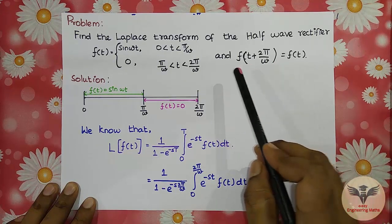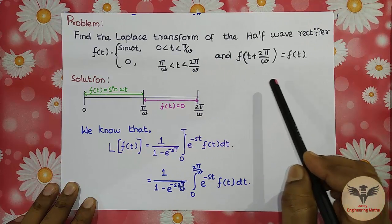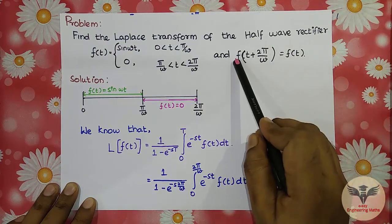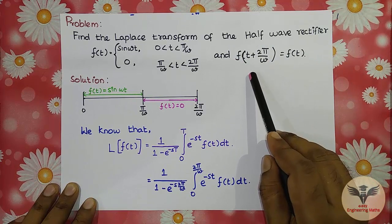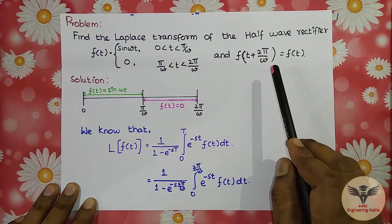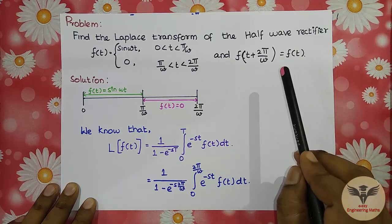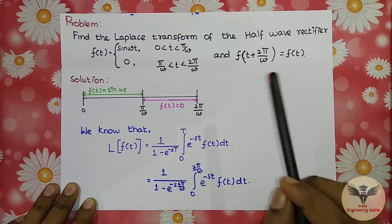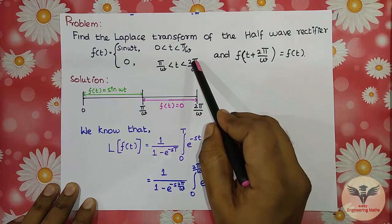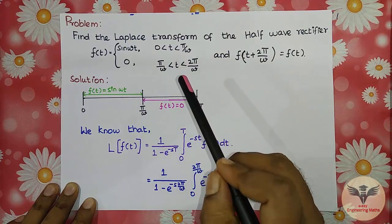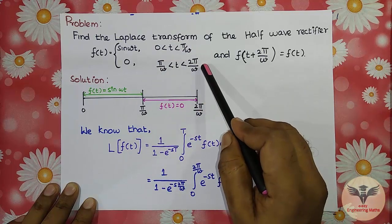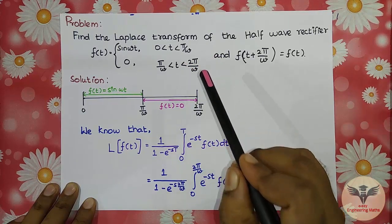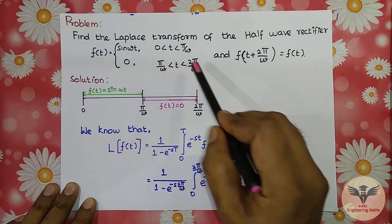When we look at the problem, we identify it as a periodic function. Using the formula, we note that f(t + 2π/ω) = f(t), confirming this is a periodic function problem. We find the capital T value, which is the ending limit. The starting limit is 0 and the ending limit is 2π/ω, so capital T = 2π/ω.